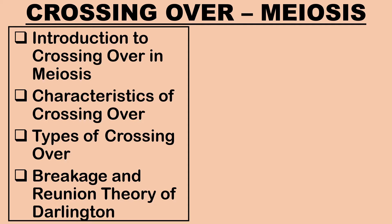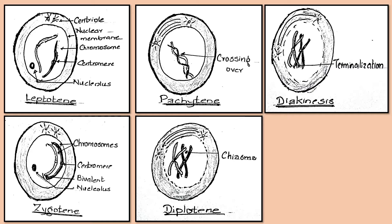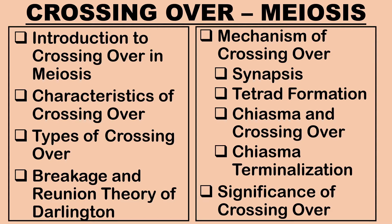Hello. In today's video we shall learn in detail about crossing over of two homologous chromosomes in meiosis. By the end of this video you'll have a clear understanding about characteristics and types of crossing over and mechanism of crossing over.